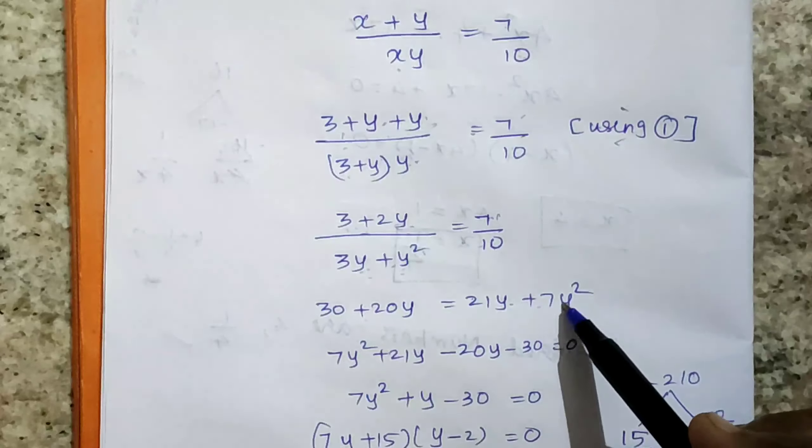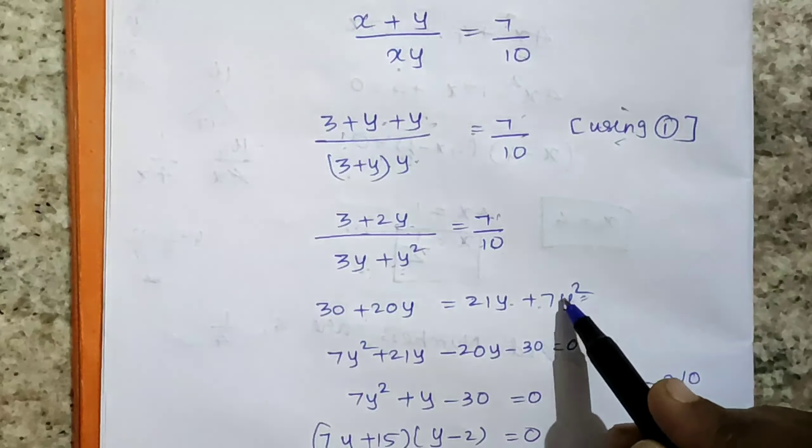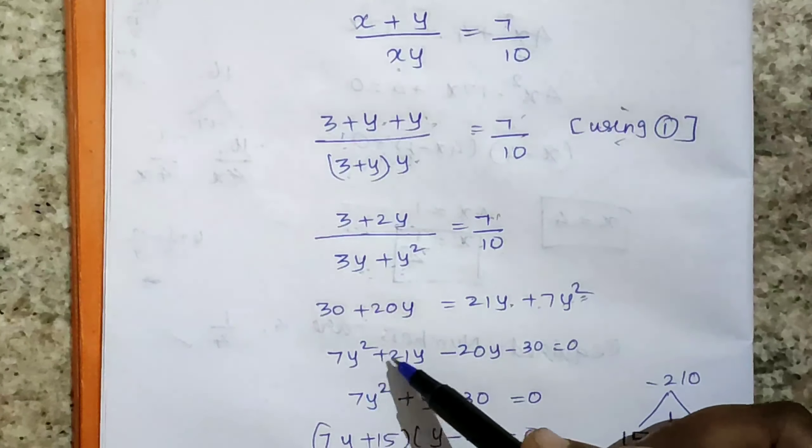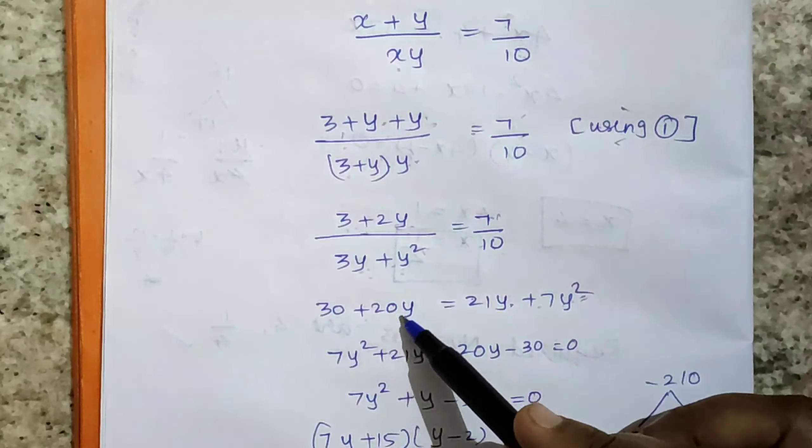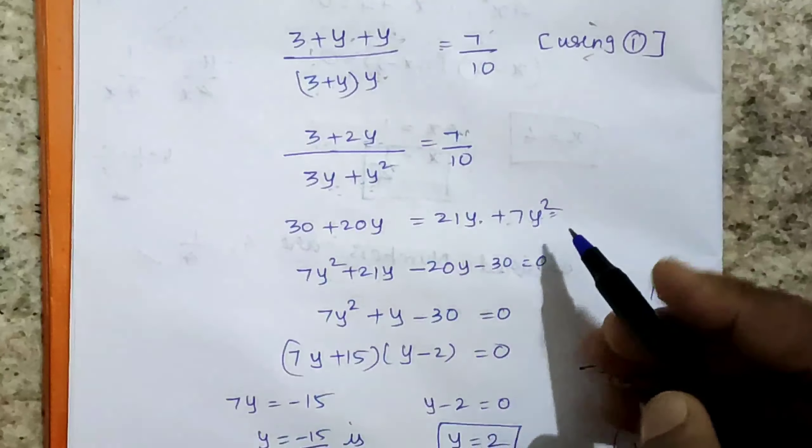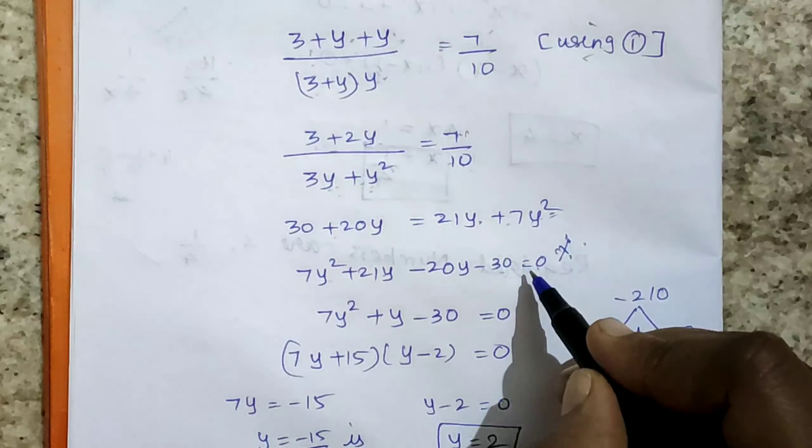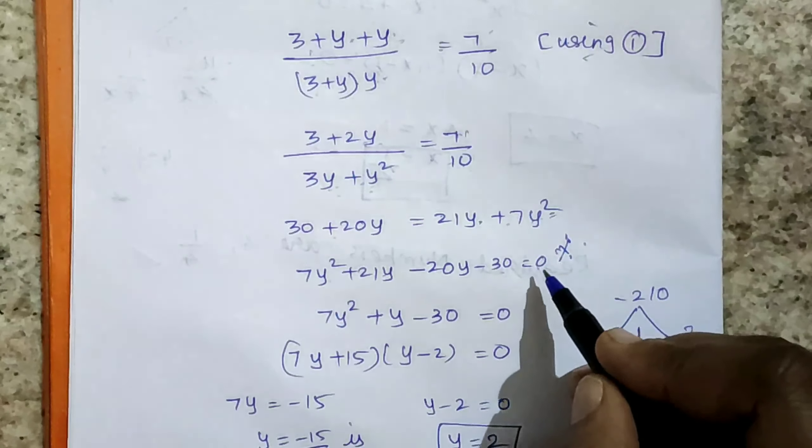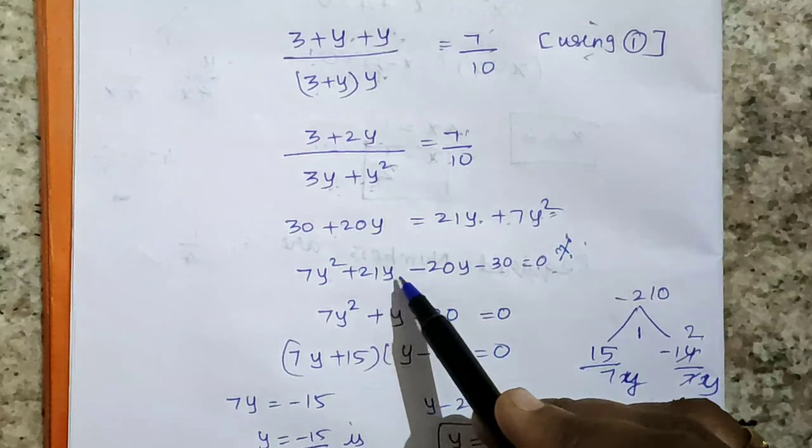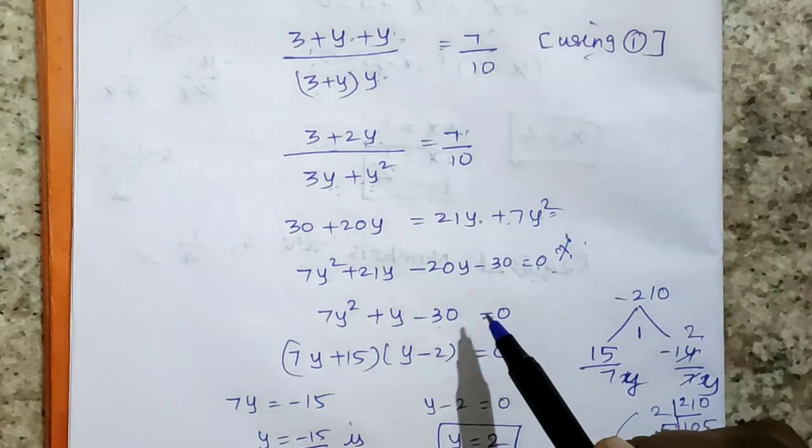Here the higher power is on the right, so bring all terms to the other side: 7y squared plus 21y minus 20y minus 30 equals 0. So 7y squared, 21y minus 20y is 1y or y, minus 30 equals 0.